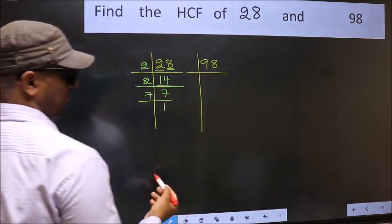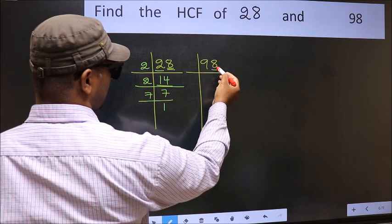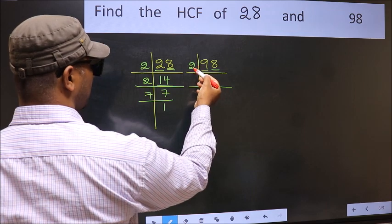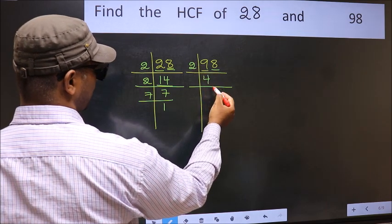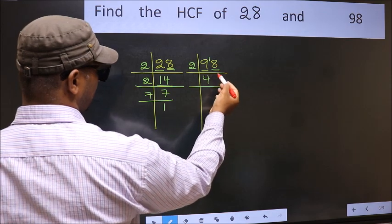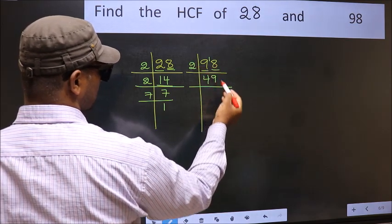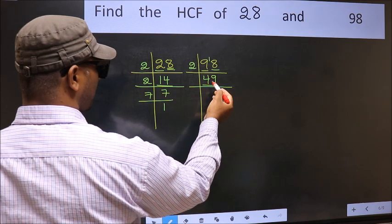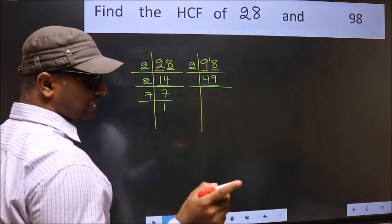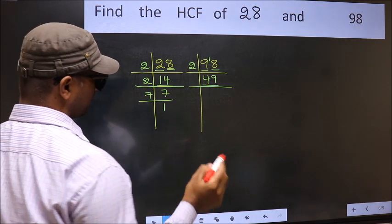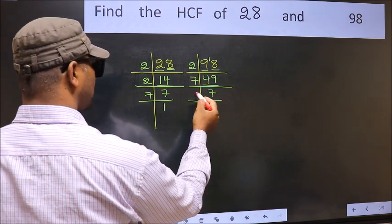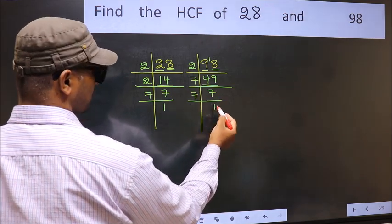Now the other number. Last digit 8 is even, so take 2. First number 9, a number close to 9 in 2 table is 2 fours 8. 9 minus 8 is 1, 1 carried forward 18. When do we get 18 in 2 table? 2 nines 18. Now we have 49. Always remember 7 into 7 is 49. That is 7 times 7 is 49. Now 7 is a prime number, so 7 ones 7.